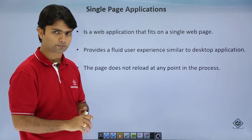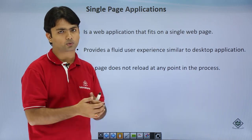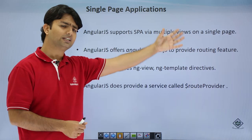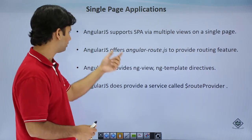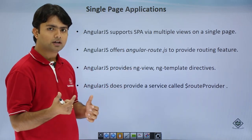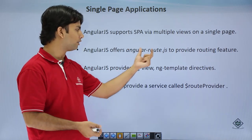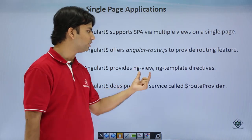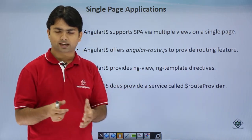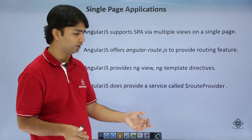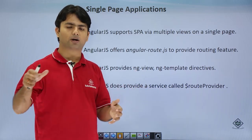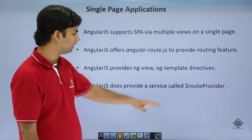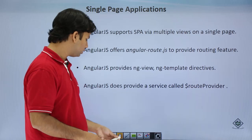Let's see what AngularJS provides us to create the single page application. It supports SPA through multiple partial views on the same page. We'll need to download another script file from the official AngularJS website — that is angular-route.js. Once you have that, it provides the ng-view and ng-template directives, using which you can set which template page should be loaded in a particular layout page. The ng-view directive renders partial views in our main layout page. For routing configuration, there is a service called $routeProvider.